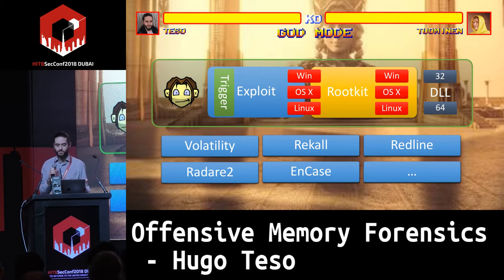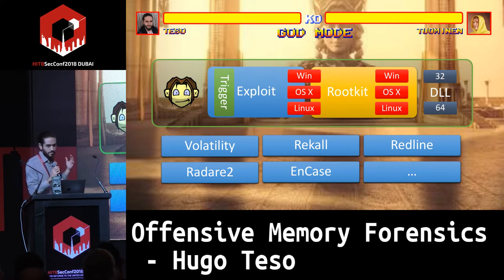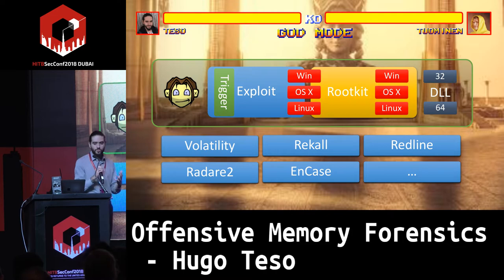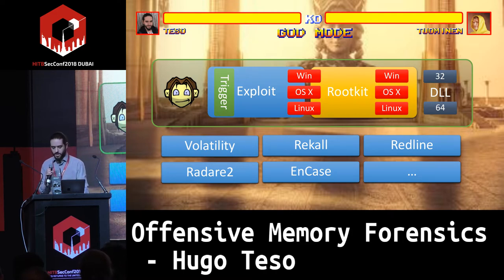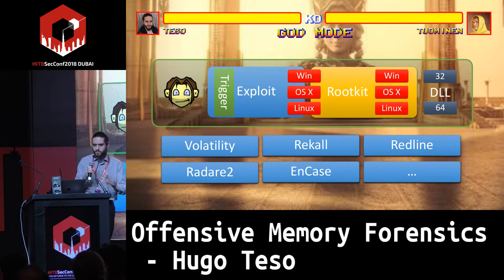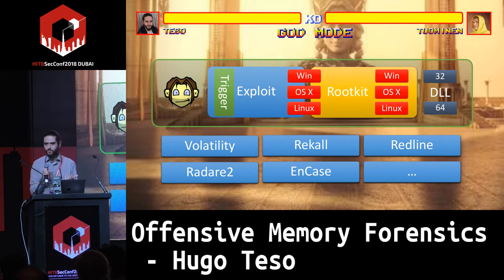The exploit also had to cover multiple tools — Volatility, Recall, Redline, as many as possible. The good news: it was extremely easy to find vulnerabilities in memory forensics software. As it happens often even now, defensive security software developers feel themselves immune to attacks, so they don't care about the security of their own platform.